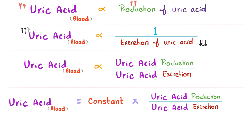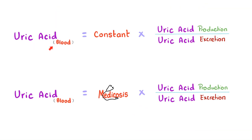From those two relationships, you can say uric acid in the blood is proportional to uric acid production over uric acid excretion. Whenever you see a proportional relationship with something in the numerator and something in the denominator, you can replace the proportionality sign with an equal sign and multiply by a constant. Uric acid in the blood equals a constant times uric acid production over uric acid excretion — I'm going to call it the Medicosis constant.